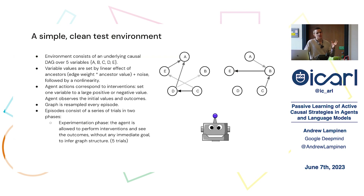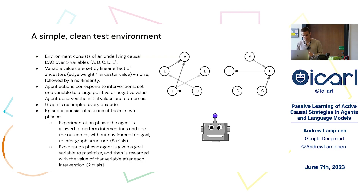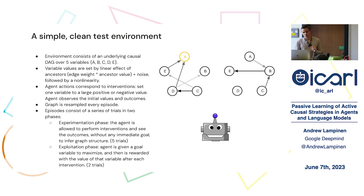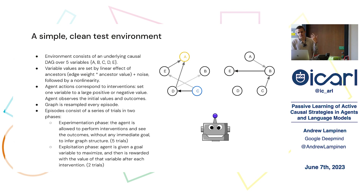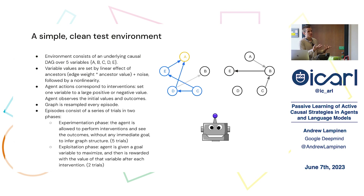To make this interesting, the agent is trained on a meta-learning task where each episode a new graph structure with new edge weights is sampled. There are two phases: an experimentation phase where the agent performs interventions and uses them to infer the graph structure, and an exploitation phase where the agent is given a goal variable to maximize and is rewarded for the outcome value of that variable. For example, in some structures it might be better to intervene on a downstream variable directly, while in others an upstream variable provides multiple paths that could increase the target. The agent has to infer the causal structure and then reason over it to achieve the goal.